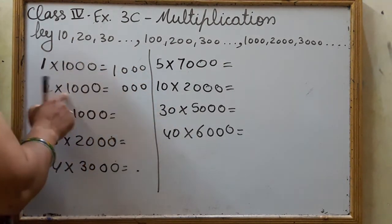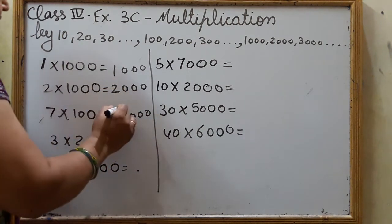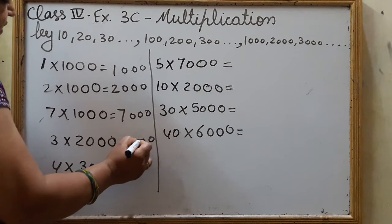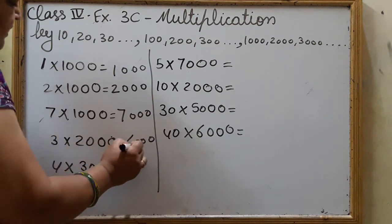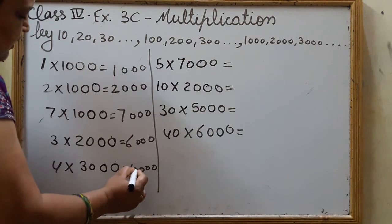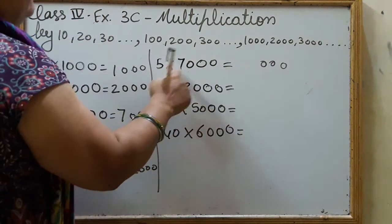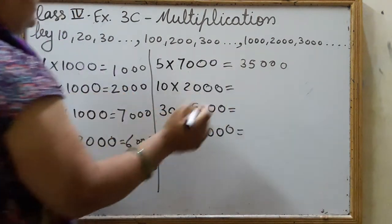0 0 0 and 2 1s are 2. 0 0 0 and 7 1s are 7. 3 zeros and 3 2s are 6. 3 zeros and 4 3s are 12.